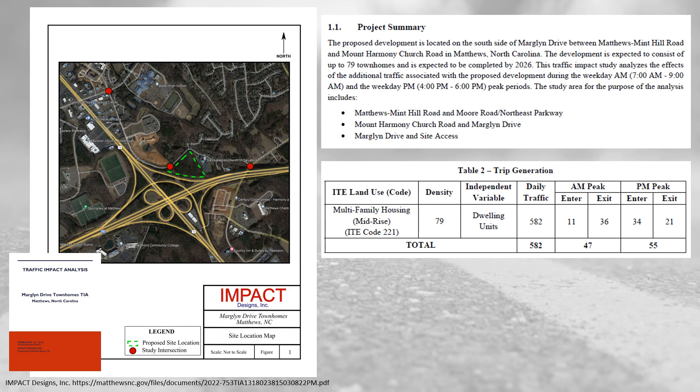Here's a specific TIA example — a project proposing to construct mid-rise multifamily housing, ending up as 79 townhomes. We can see the project site in green, and ultimately three intersections nearby are included in this TIA as locations that will be impacted by this development.